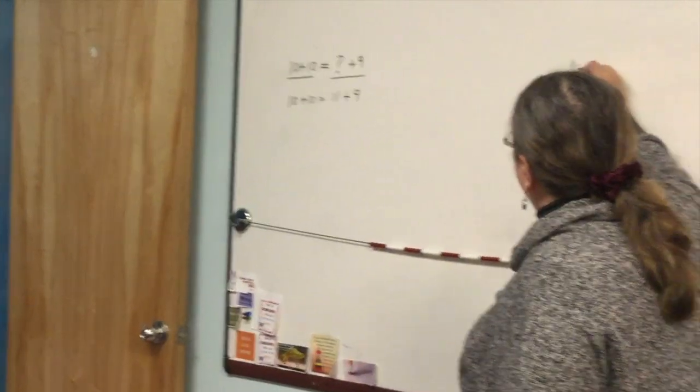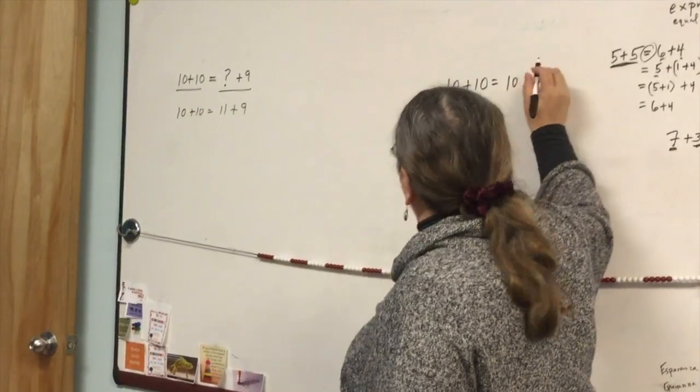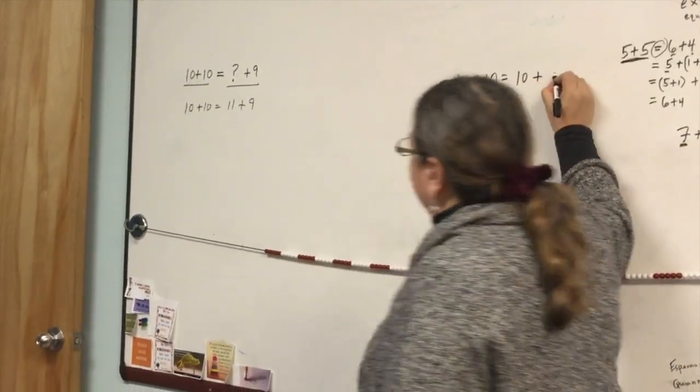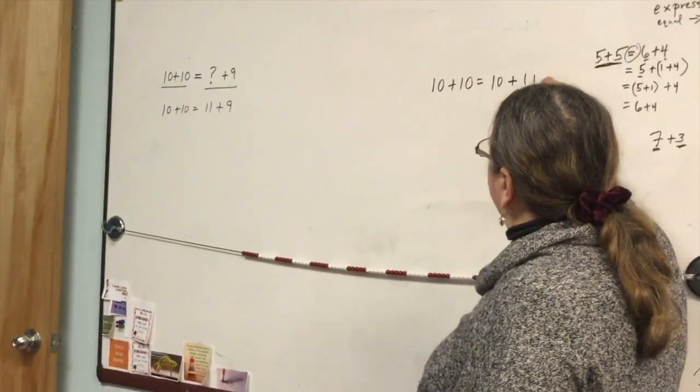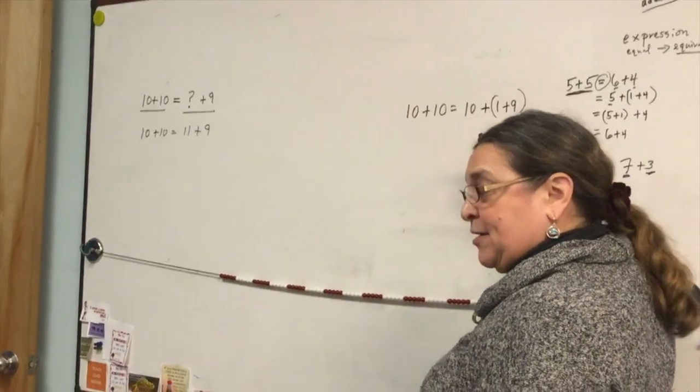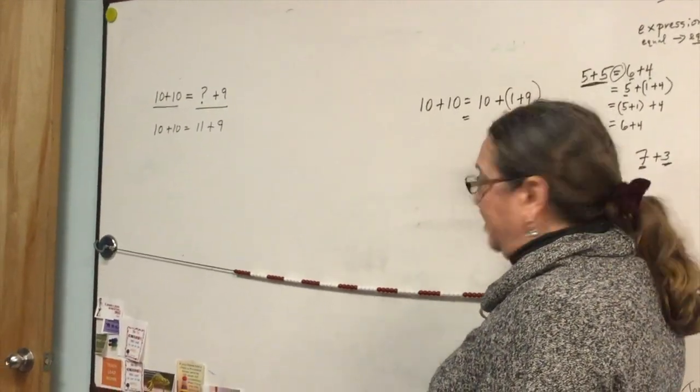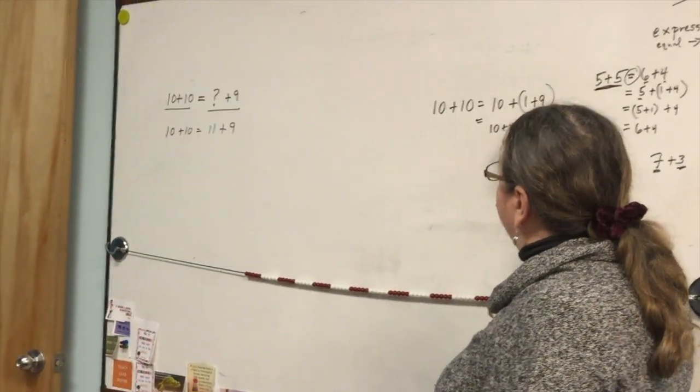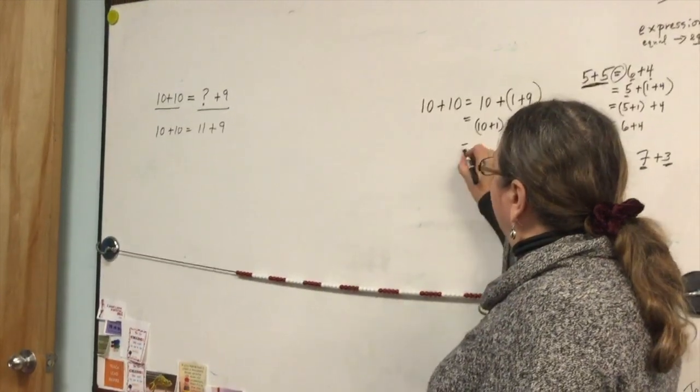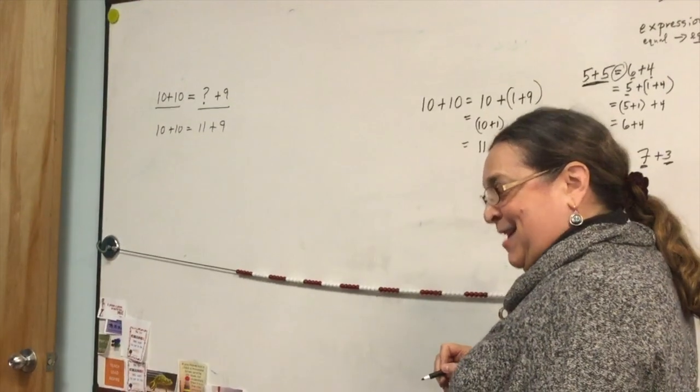You're saying I'm going to take one away from one addend, and so are you thinking that I'm going to break one of these tens into one and nine? Yeah? That model's how you're thinking? And then I'm going to take that one and give it to the ten, and I'm going to leave this addend the same, and so now I have a new problem, which is 11 plus nine.